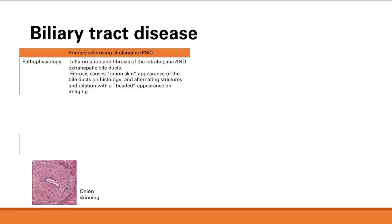Primary sclerosing cholangitis is inflammation and fibrosis of the intrahepatic and extrahepatic bile ducts — so bile ducts both in and outside of the liver. This is of unknown origin, and that's PSC: inflammation and fibrosis of the bile ducts.